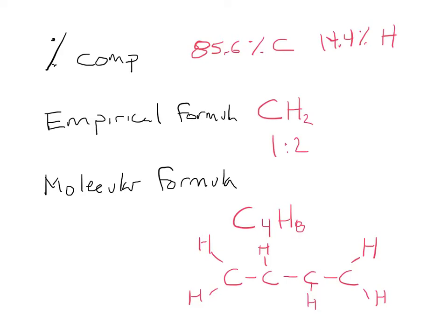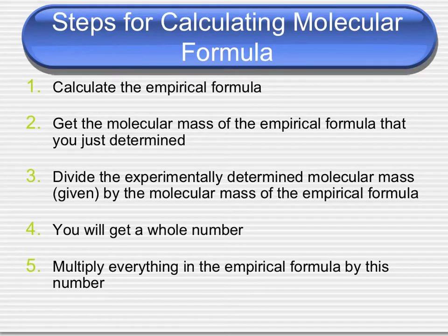In this video, we're going to look at how to get the molecular formula. We're going to start with percent composition, use that to get the empirical formula, and then use the empirical formula to get the molecular formula. It's a stepwise process where you need to do all of the individual steps in order to get to the final product. There are five steps. Step one is to calculate the empirical formula using the steps from the last video. Once you have the empirical formula, step two is to get the molecular mass of that empirical formula by adding up the molar masses to get a grams-per-mole number.